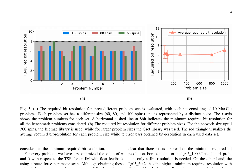In the context of Ising machines with binary feedback, the authors investigate the required bit resolution for implementing a feedback term. They evaluate the minimum required bit resolution for three problem sets, each consisting of 10 max-cut problems with different sizes of 60, 80, and 100 spins. The results, presented in Figure 3A, show that the minimum required bit resolution varies across problem sets, with a maximum of 8 bits required for the G05-60.2 benchmark problem.